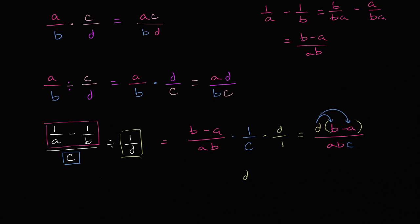We could write this as d times b, db minus d times a, all of that over abc. And we are done. Thank you for that.